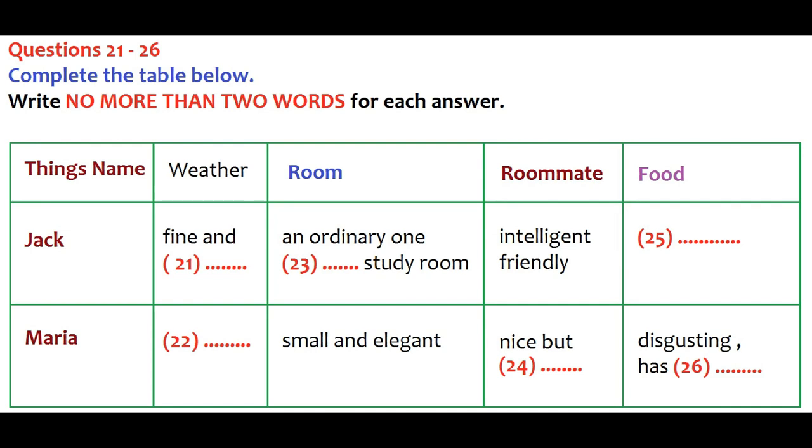What about your room? Is it a nice one? Yes, it's small and elegant. How about yours? Mine is an ordinary one. It's a twin study room. I share it with one of my classmates. He's intelligent and very friendly. We're getting on quite well. How's your roommate? She's very nice, but a little bit quiet. She likes reading and seldom speaks.